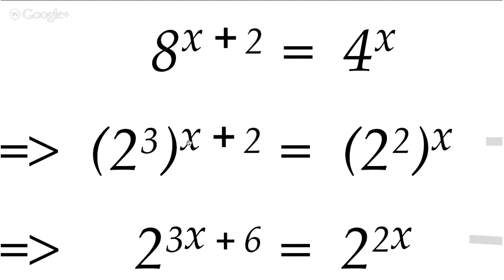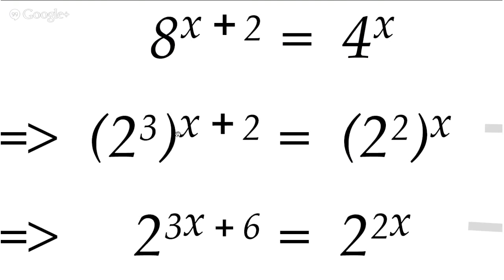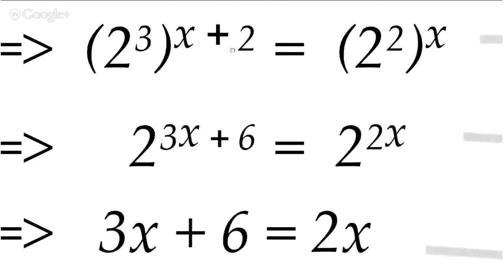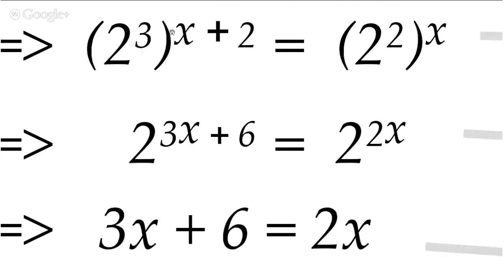Once I've done that there's something else I can do. You can see the x plus two stays there as a power, and the x is still there. I've just replaced four with two squared and eight with two cubed. Now I've got a power of a power situation — a power outside something that already has a power. This bit means two cubed all to the power of x plus two. The x plus two is applied to the whole thing, so you have to do three times x and three times two. Three times x is three x and three times two is six — that's using the power of a power rule.